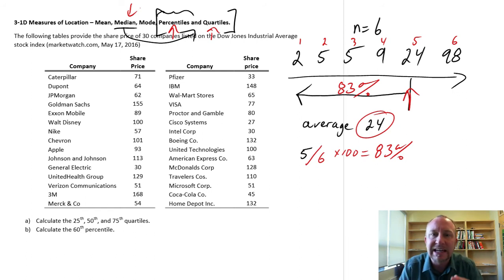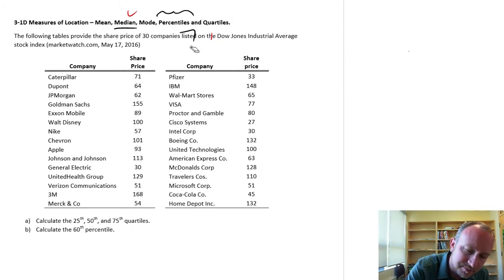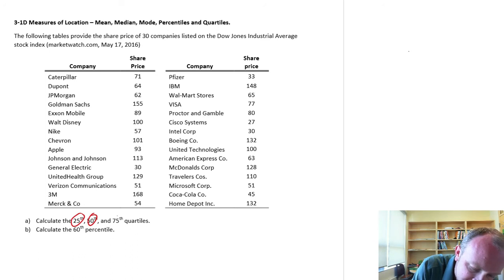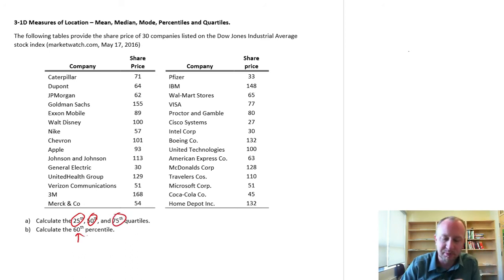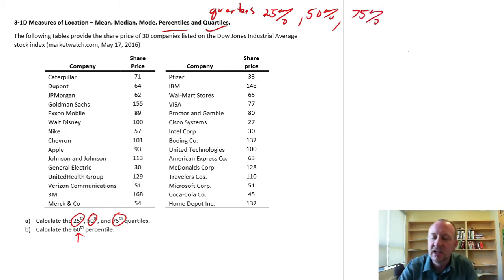So let's get into this exercise now. And we'll calculate using this data set of share prices. So I have the share prices of 30 companies on the Dow Jones Industrial Average. And here I want to calculate the 25th, 50th, and 75th quartile, and the 60th percentile. Now these are all very much the same concepts. When we talk about quartiles and percentiles, it's just that quartile, we're talking in quarters. And so we're talking in segments of 25%. So 25, 50, and 75%.